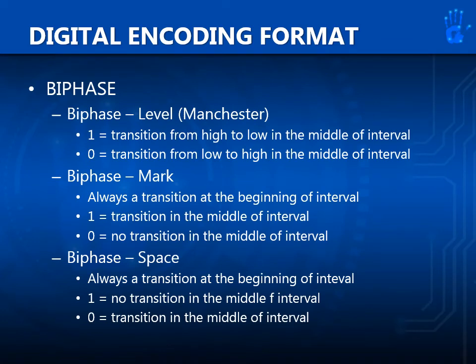Bi-phase level, or Manchester: for bit 1, a transition from high to low in the middle of the interval will occur. For bit 0, a transition from low to high in the middle of the interval will occur. Bi-phase mark: there is always a transition at the beginning of the interval. For bit 1, there is also a transition in the middle of the interval. For bit 0, no transition in the middle. Bi-phase space: always a transition at the beginning of the interval. For bit 1, no transition in the middle. For bit 0, a transition in the middle.